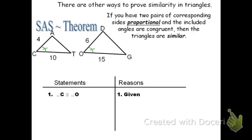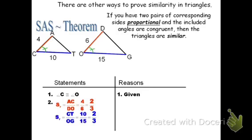Next, I'm going to look at the side ratios. The ratio of CA to DO is 4:6, which reduces to 2:3. The other side ratio, CT to OG, is 10:15, which also reduces to 2:3. The 2:3 and 2:3 are equal, so my sides are proportional — they both have a ratio of 2:3. The justification is the ratio of corresponding sides. Now that I have two pairs of corresponding proportional sides and the included angle, I can say this is SAS Similarity Theorem — two pairs of proportional sides and the included angle.